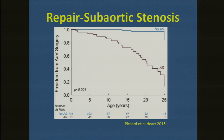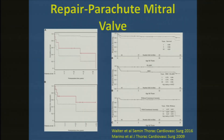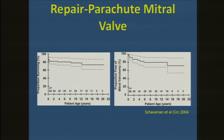Moving on to parachute mitral valve — again, precious little data exclusively on this. This is a natural history study from Toronto looking at parachute mitral valve: probability of survival and probability of needing valve surgery in people born with a parachute mitral valve. There is an upfront mortality rate among those who had a hypoplastic ventricle from congenital mitral stenosis and couldn't have a two-ventricle repair. If you ignore that early period, you can see a continued drop-off, continued mortality, and continued need for valve surgery among patients with parachute mitral valves.